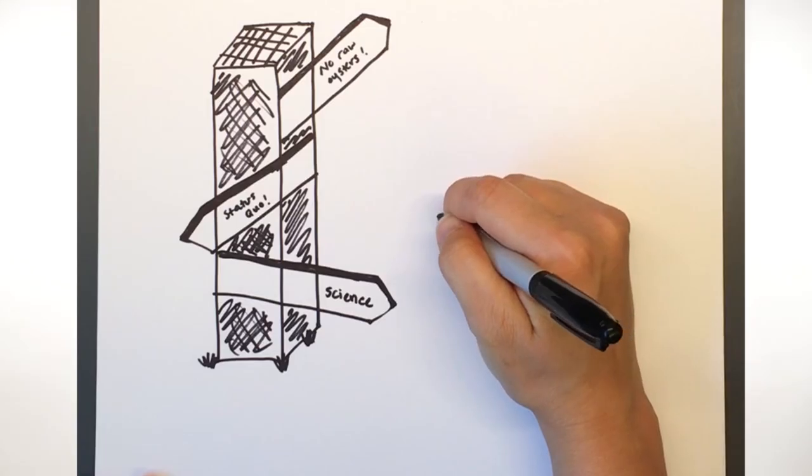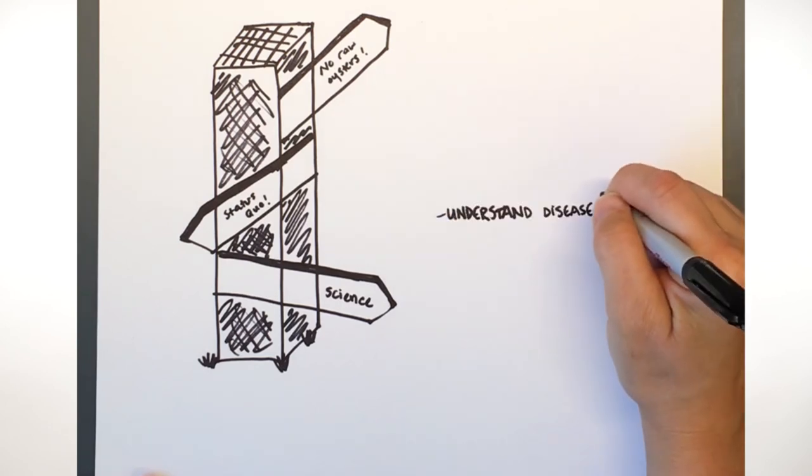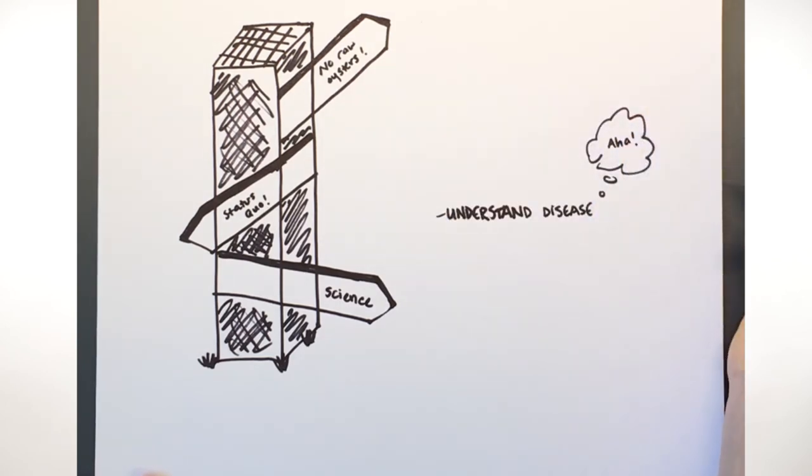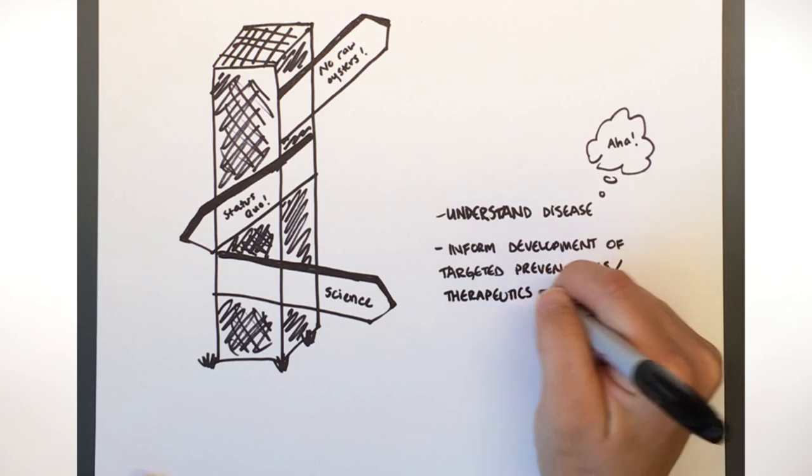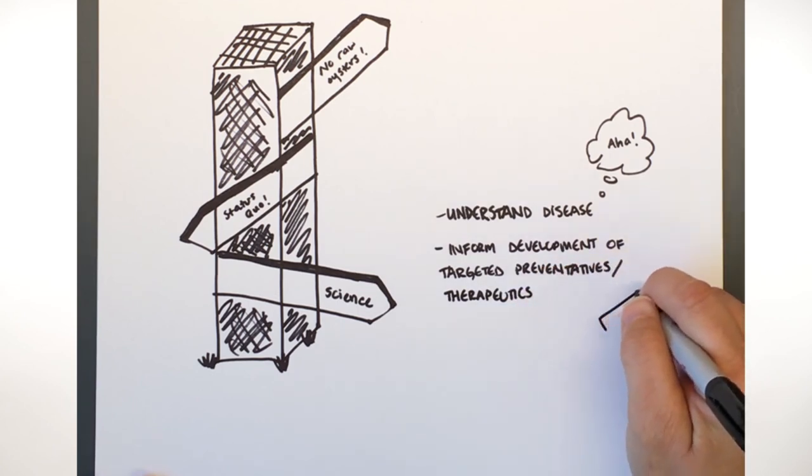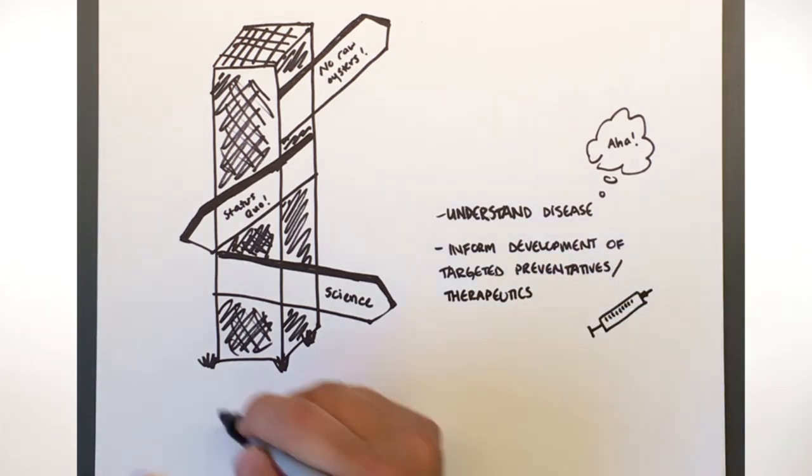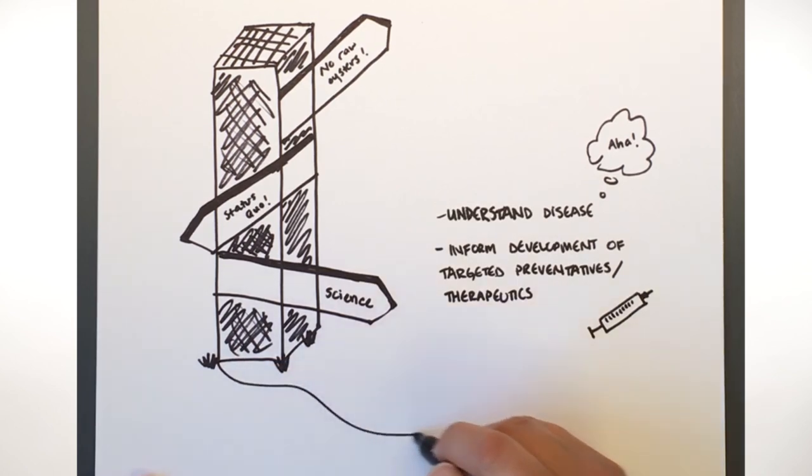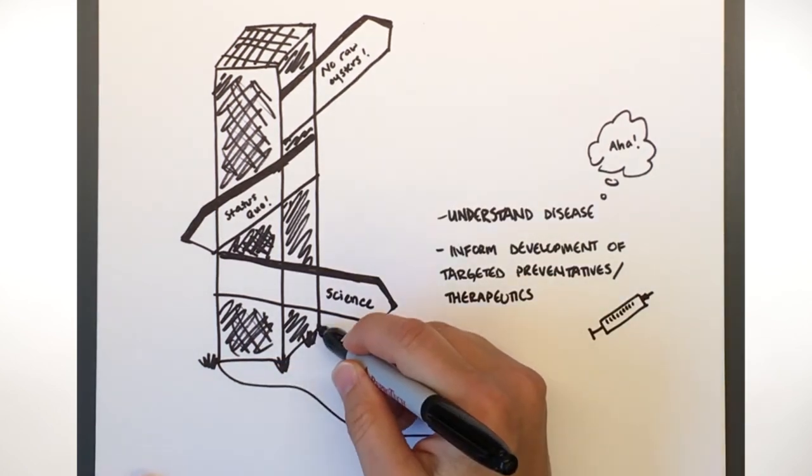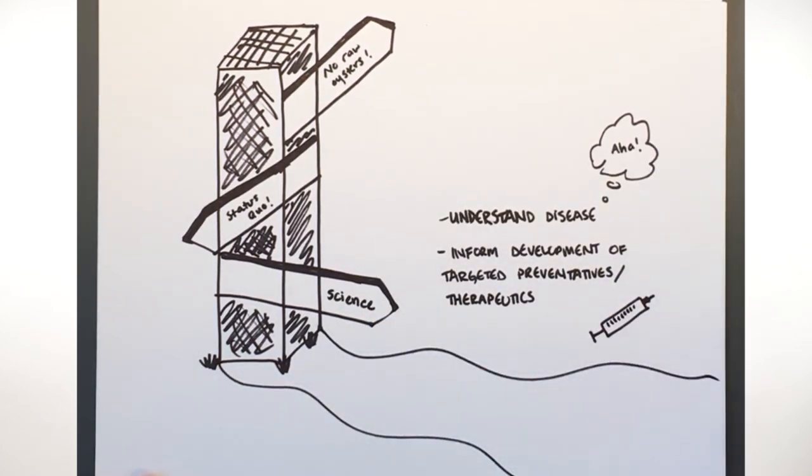In fact there's a third option. It's science. Ongoing research is doing a good job increasing our understanding of this disease and will help inform the development of targeted preventatives and therapeutics for Vibrio vulnificus infections. Of course it's a long road, but we're making progress and I think that one day we'll be far enough down that road that I'll be able to enjoy my raw oysters without worrying about becoming an ironic headline.